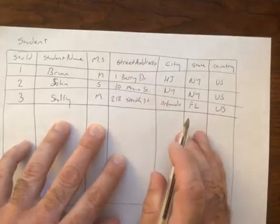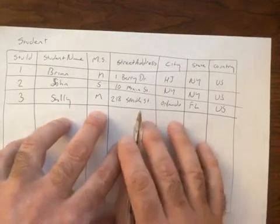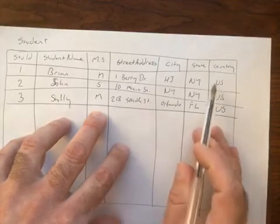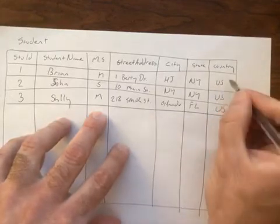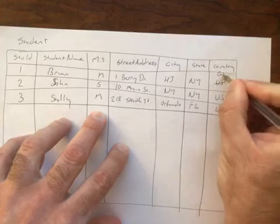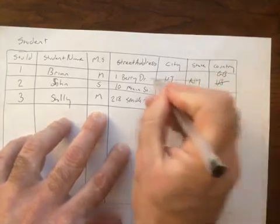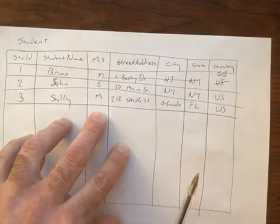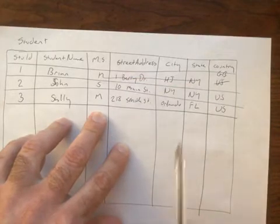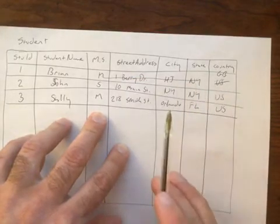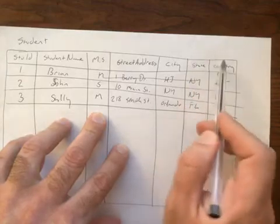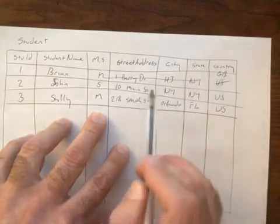So there is a transitive functional dependency here. What if the student moved and they went out of the country? So they were no longer in the U.S. They went to, I don't know, I go to Great Britain, who knows? So if that's the case, this stuff has to change as well. There's no way around that. So that is a transitive functional dependency. There is a dependency between the attributes that are not keys.